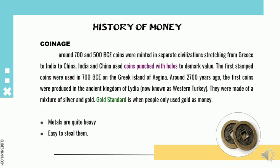Around 700–500 BCE, coins were minted in separate civilizations stretching from Greece to India and then to China. India and China used coins punched with holes to demark value. The first stone coins were used in 700 BCE on the Greek island of Aigina. Around 2,700 years ago, the first coins were produced in the ancient kingdom of Lydia, now known as Western Turkey, made of a mixture of silver and gold. Until several hundred years ago, these metals functioned as a medium of exchange in most societies, and this new metal money was easier to carry and lasted for a long time.